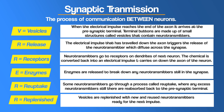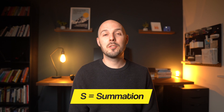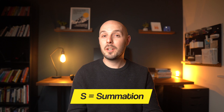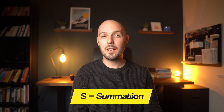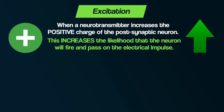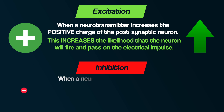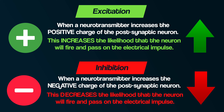How do these chemicals influence whether the electrical signal gets passed on to the next neuron? That brings us to summation. Whether the neuron fires depends on whether the neurotransmitters received at the post-synaptic receptor site have an excitatory or inhibitory effect. Excitation is when a neurotransmitter increases the positive charge of the post-synaptic neuron, increasing the likelihood it will fire. Inhibition is when a neurotransmitter increases the negative charge, decreasing the likelihood it will fire.